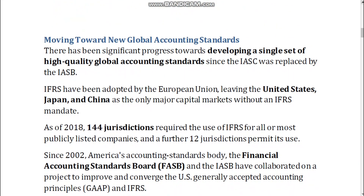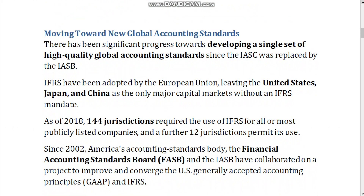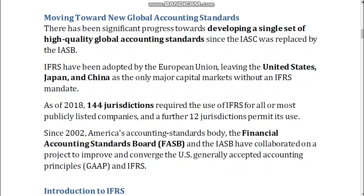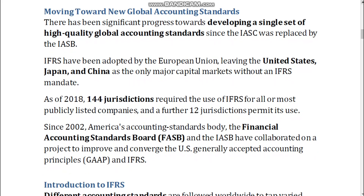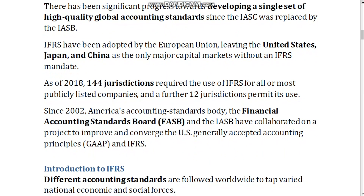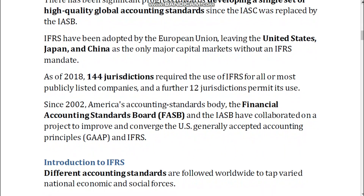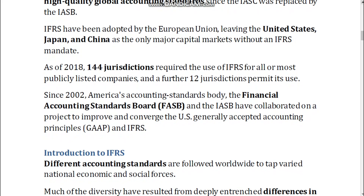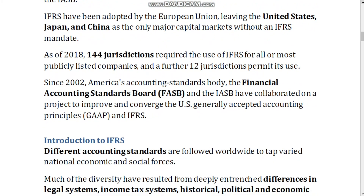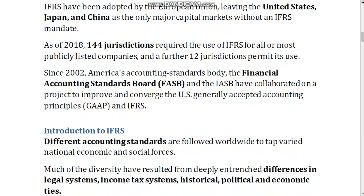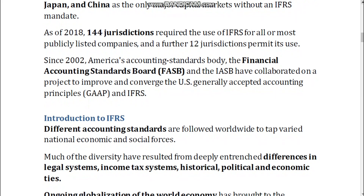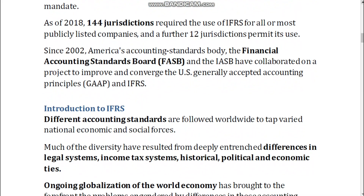Moving toward global accounting standards. There has been significant progress towards developing a single set of high quality global accounting standards since the IASC was replaced by the IASB. IFRS have been adopted by the European Union, leaving the United States, Japan, and China as the only major capital markets without an IFRS mandate. As of 2018, 144 jurisdictions required the use of IFRS for all or most publicly listed companies, and a further 12 jurisdictions permit its use.